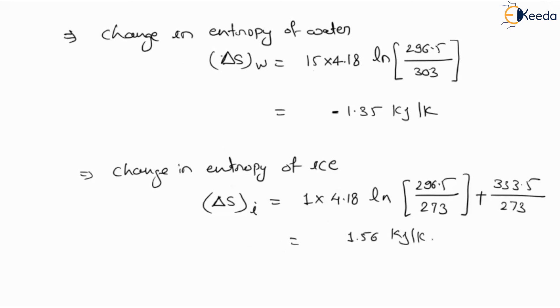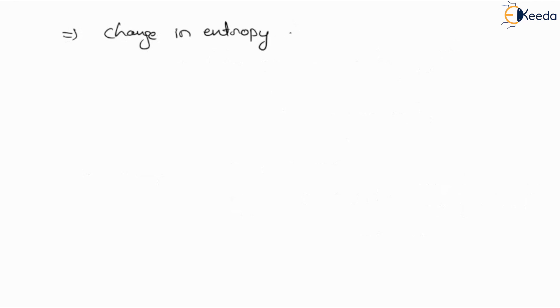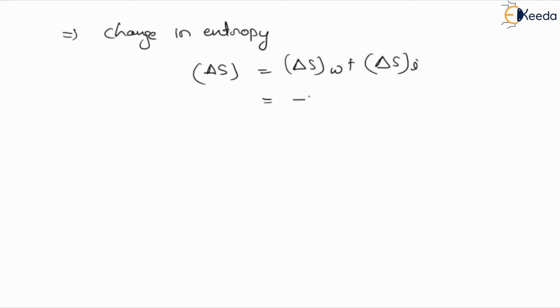We now have the change in entropy of water and the change in entropy of ice. The total change in entropy ΔS = ΔS_water + ΔS_ice = −1.35 + 1.56 = 0.216 kJ per Kelvin.